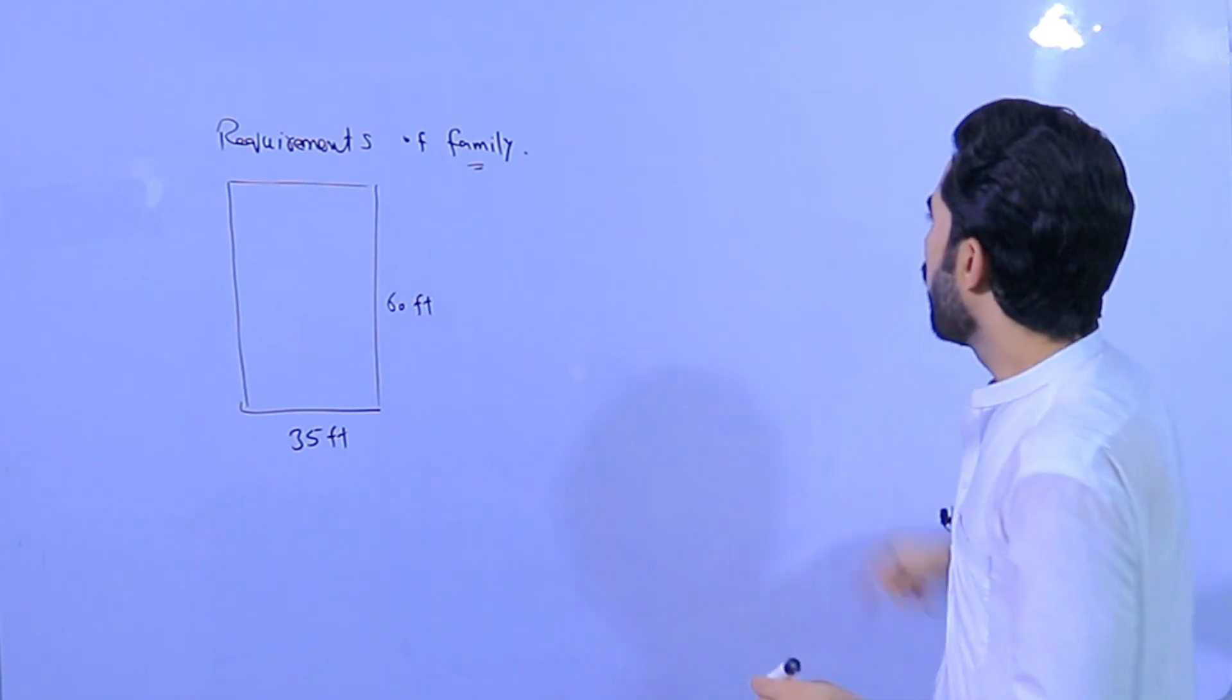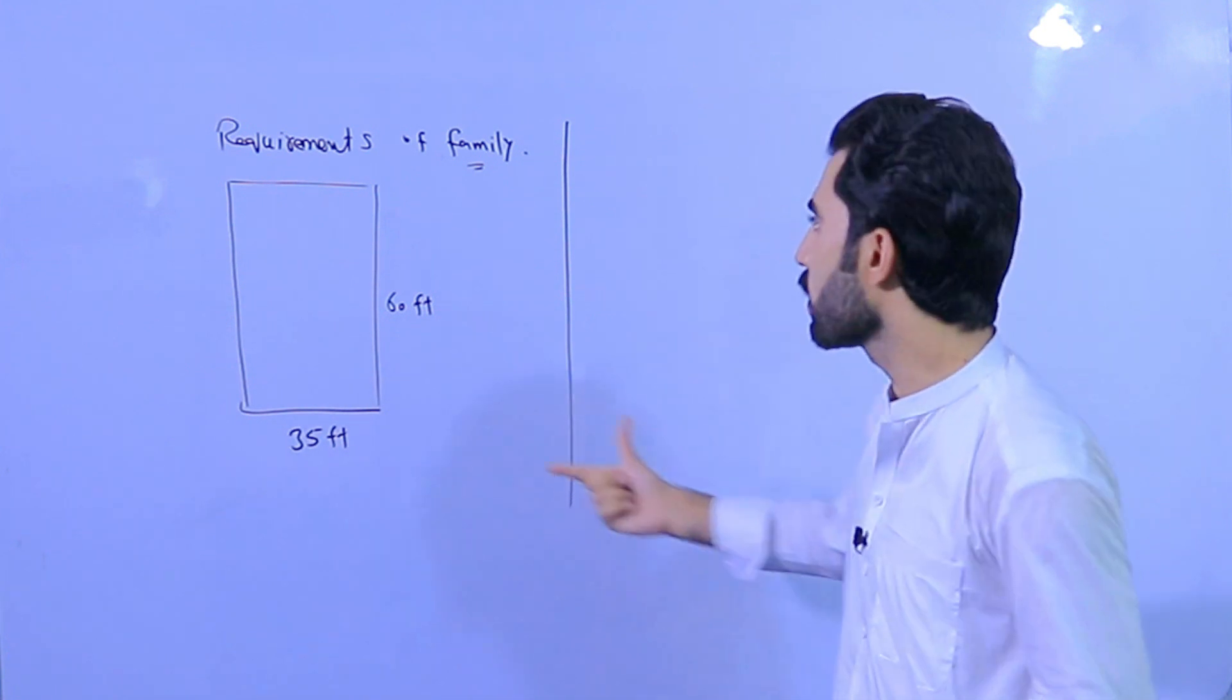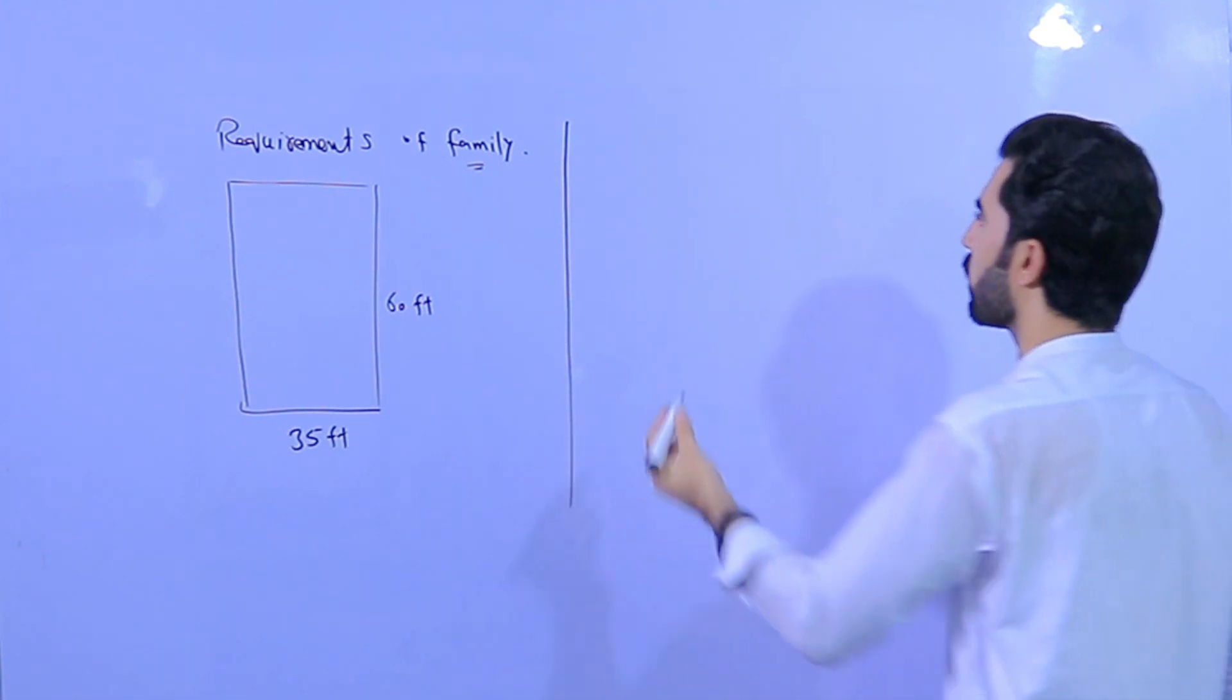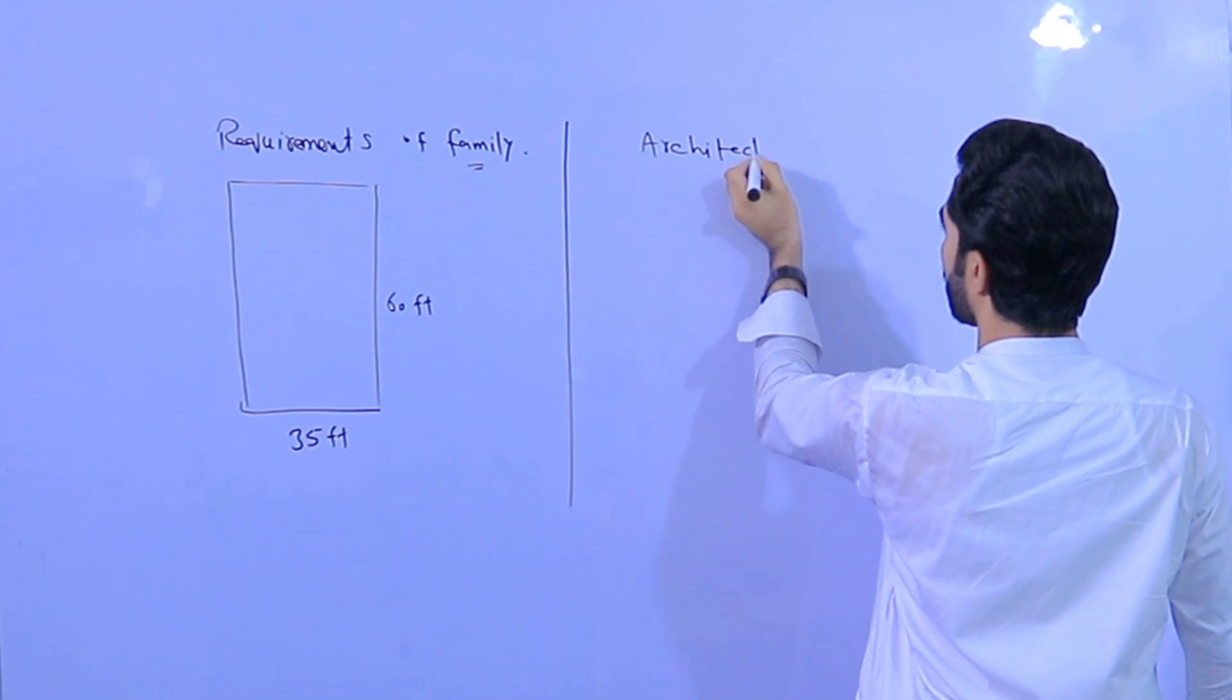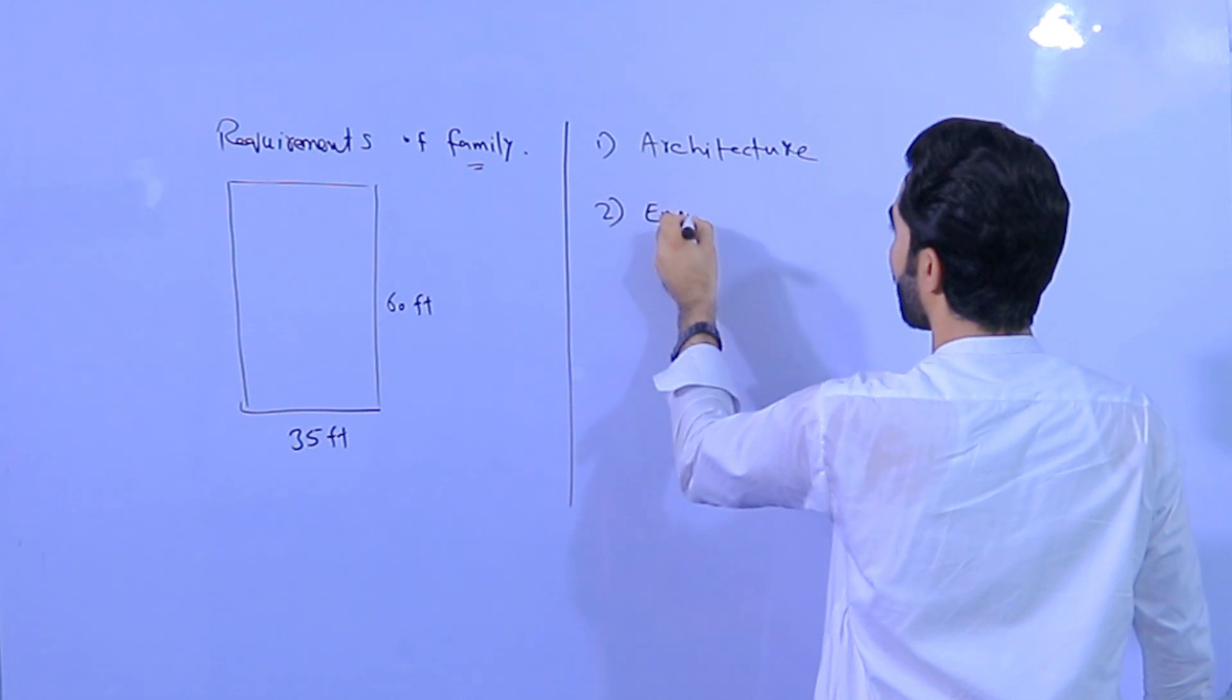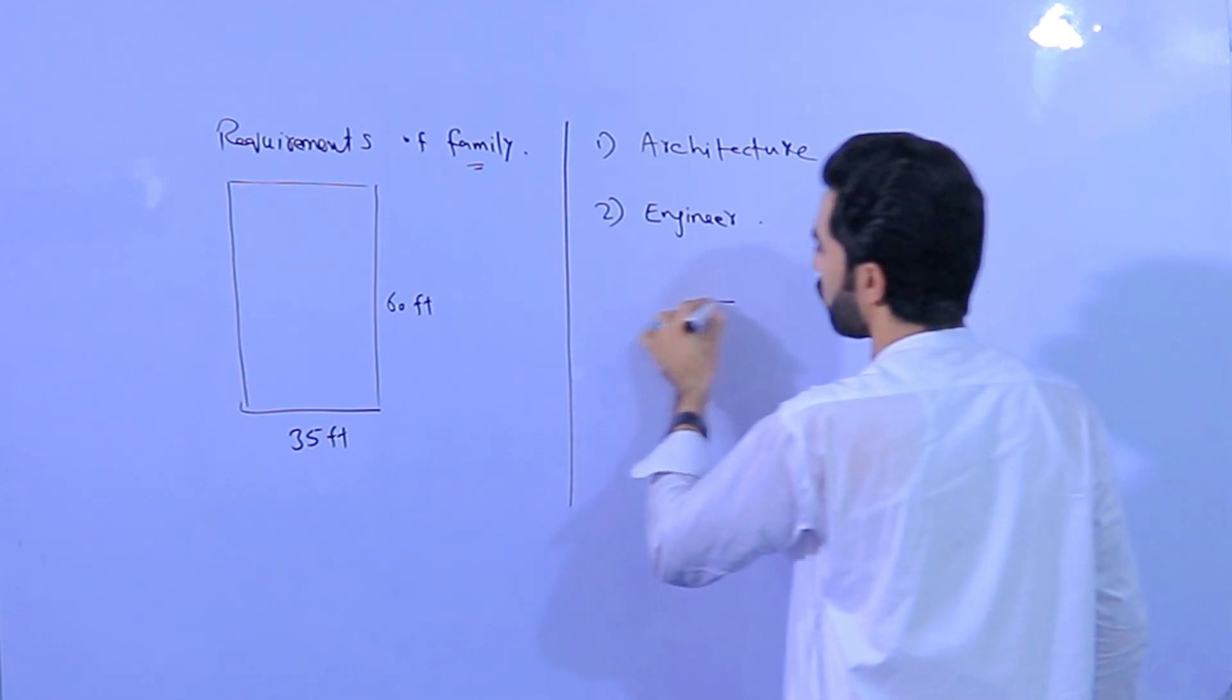Then by who you can design this house planning or this plot? So guys, we have two main persons: one is architect, the second one is engineer, and also we have the third one which can cheat you, that is draftsman.